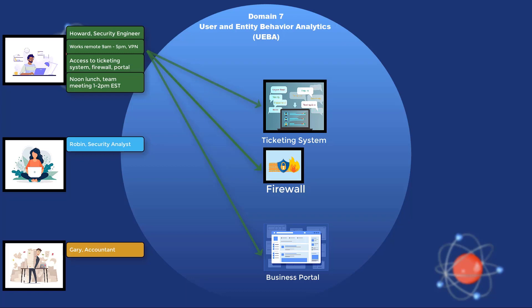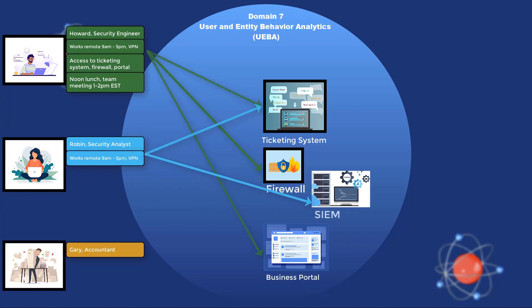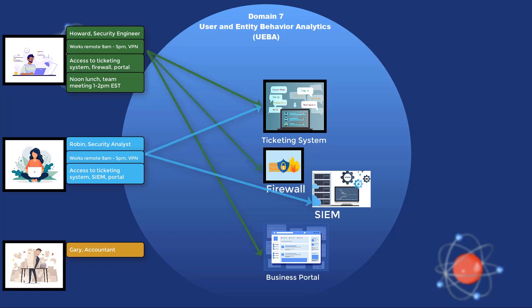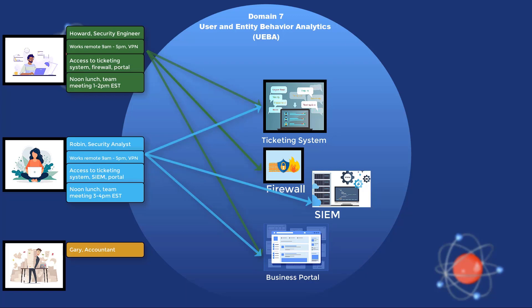Here are Robin's daily duties. She also works from home and logs on at 9am into the corporate office network via VPN. She logs into the same ticketing software portal, assigns and updates herself with high-priority alerts from the SIEM software, logs onto the SIEM software to check out the logs, and tries to correlate the story of what is happening within a customer's network. She then updates customers about their issues in the same business portal as Howard. She usually takes lunch from noon to 1pm, comes back and works until 3pm, when there is a team meeting until 4pm, then proceeds to work until 5pm, end of business day.